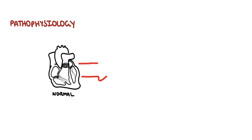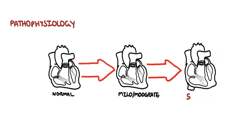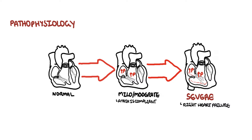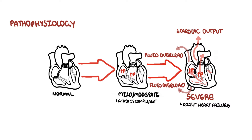These different causes of tricuspid regurgitation will lead to mild, moderate, or severe tricuspid regurgitation. The mechanisms of injury include increased pressures and dilation of the right ventricle and right atrium. The atrium is relatively compliant, so there are few major hemodynamic changes with mild to moderate TR. However, in severe TR, right-sided heart failure results because the right heart is unable to eject enough blood, leading to fluid overload.